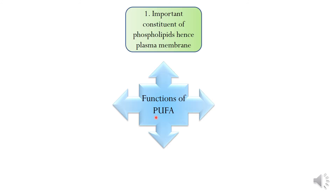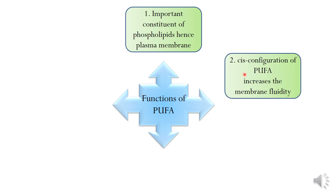Functions of PUFA: so far we have seen the different functions of omega-6 and omega-3 polyunsaturated fatty acids. Now here is a summary of their overall functions. PUFAs are important constituents of phospholipids and hence are an important part of the plasma membrane. They exist in cis configuration naturally, so PUFAs increase the membrane fluidity.